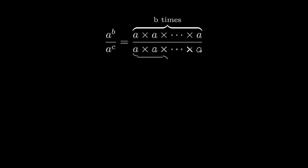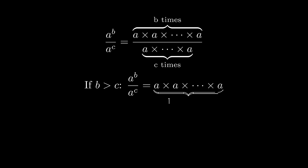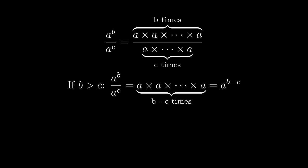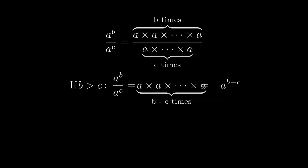From this definition, we can calculate the value of the fraction a to the power of b over a to the power of c. If b is greater than c, by definition, we get a to the power of b minus c.